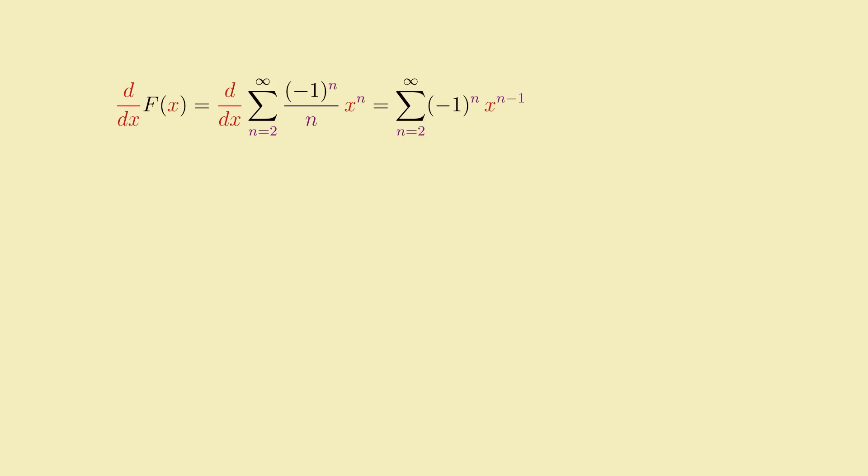Well, we get something significantly simpler. An alternating series involving only powers of x. We can simplify it even further if I re-index the sum to start at n equals 1 instead of n equals 2. This produces negative 1 to the n plus 1 times x to the n. If we then factor out the extra negative sign contained in the negative 1 factor, we can combine it with the x to the n factor to get negative x, the whole thing, to the power n.